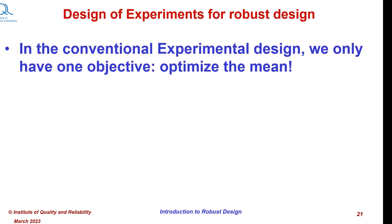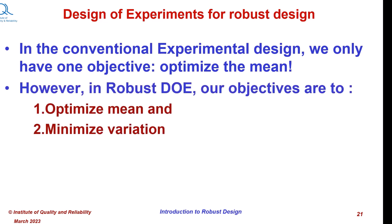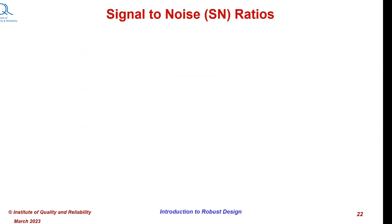Let us understand the difference between conventional and robust design in terms of design of experiment strategy. In conventional experimental design, we have only one objective: optimize the mean. However, in robust design of experiments (DOE), our objectives are to optimize the mean and also to minimize variation. For achieving both objectives, Taguchi introduced a figure of merit called signal-to-noise ratios.